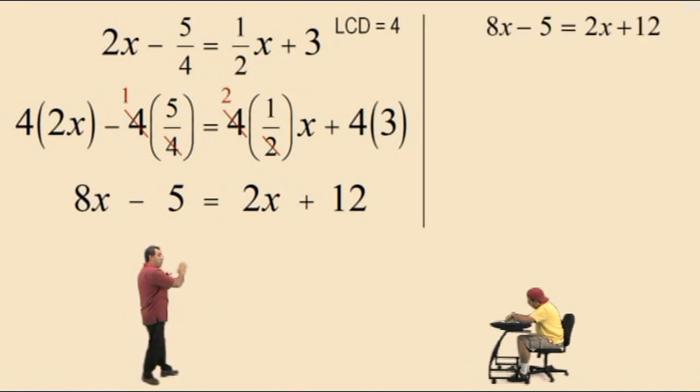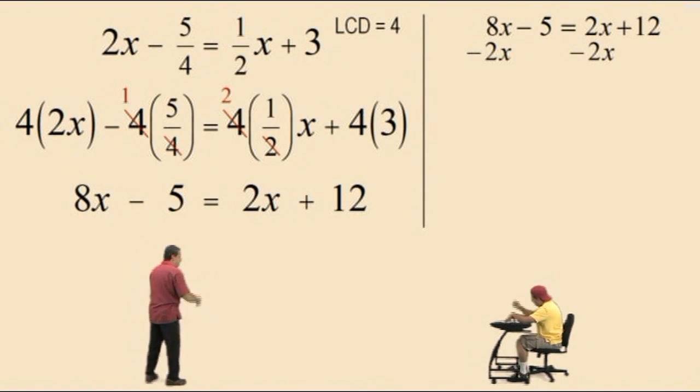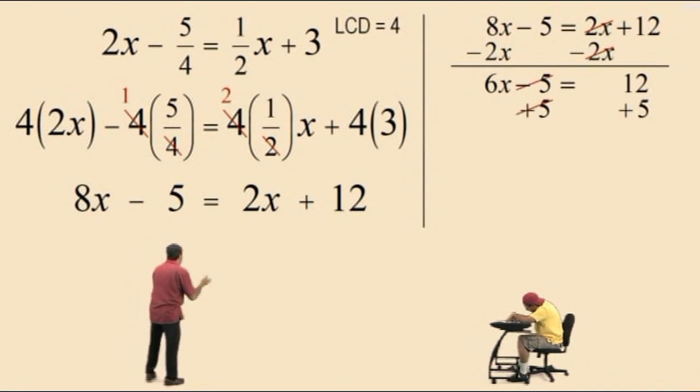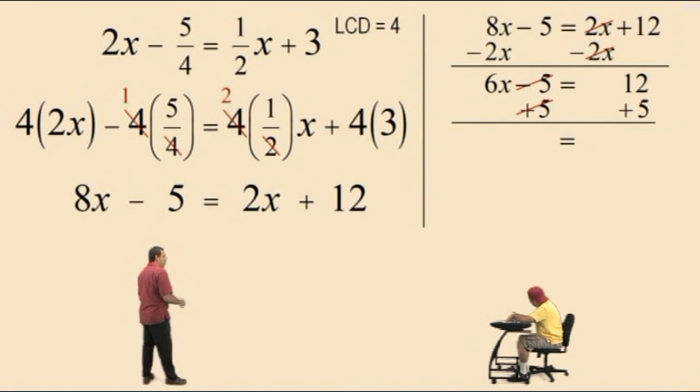Now, notice we've got variables on both sides. So we're going to isolate our variable on the left-hand side by doing what, Charlie? Subtract 2x. Subtracting 2x to cancel them out on the right. And so 8x subtract 2x is 6x. Subtract 5. Right-hand side is 12. Now what, Charlie? Add 5. Add 5 to both sides. That's right. We've still got to isolate the variable on the left-hand side. So we're adding 5s to get rid of that subtract 5. Those cancel out. We have 6x on the left. Right-hand side, 12 plus 5 is 17.